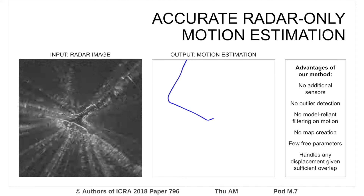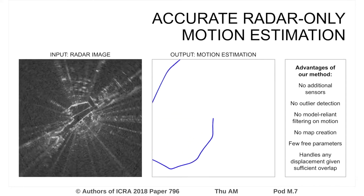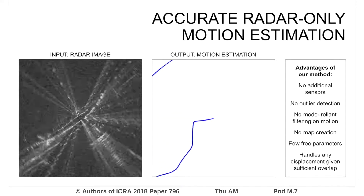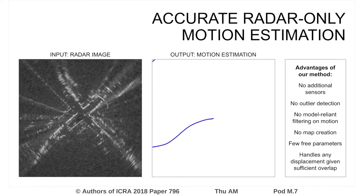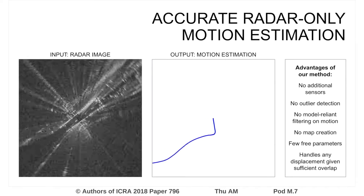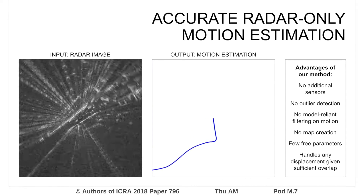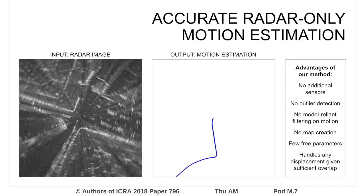Our method produces accurate radar-only motion estimation without outlier detection, mono-reliant filters, or maps. It has very few free parameters, all of which are intuitive to tune.